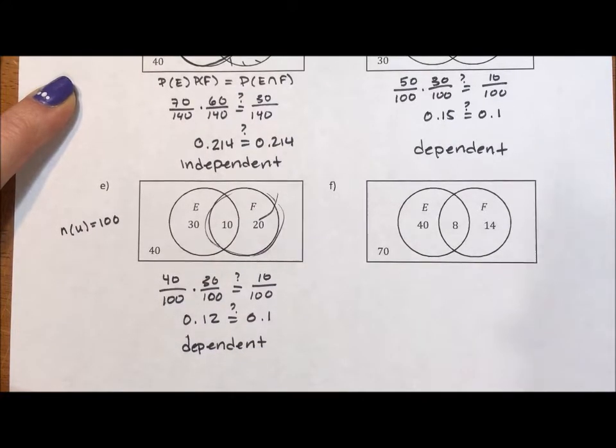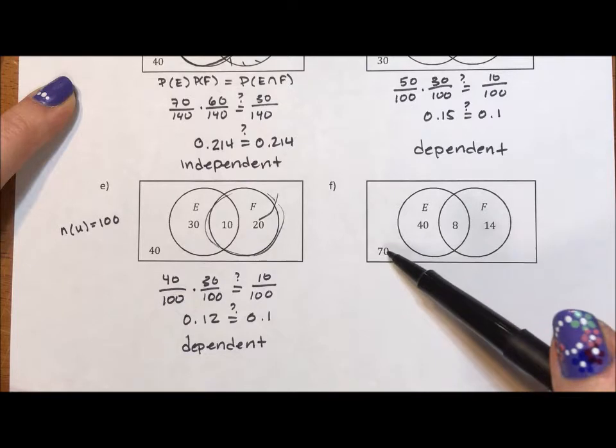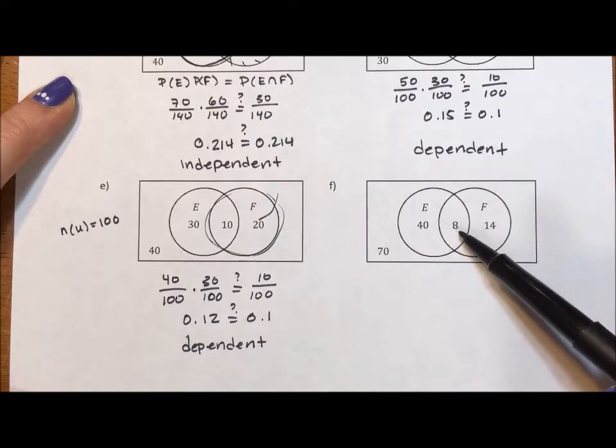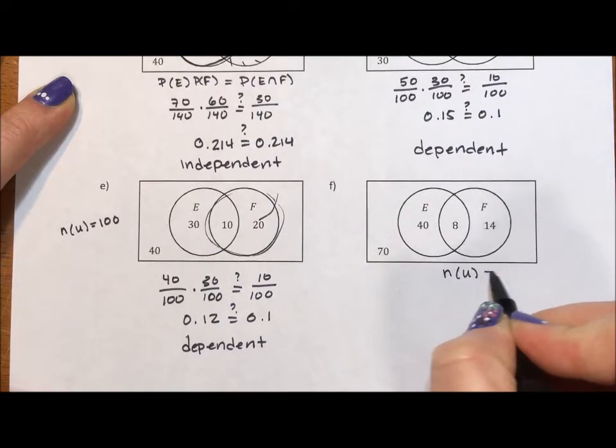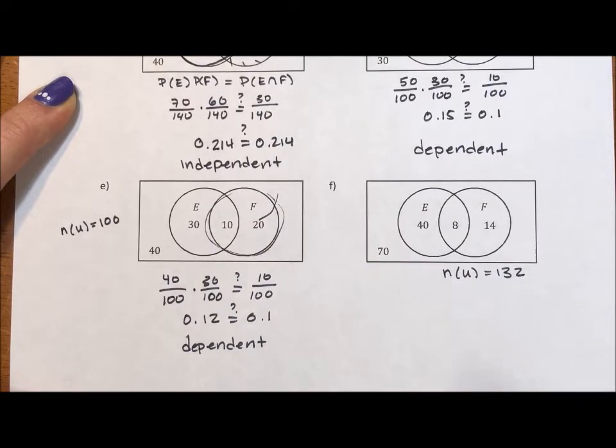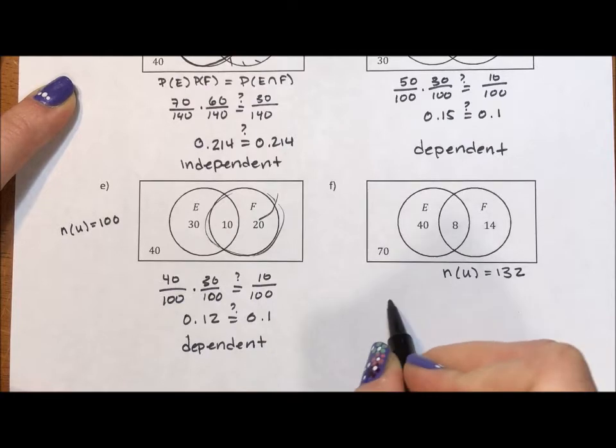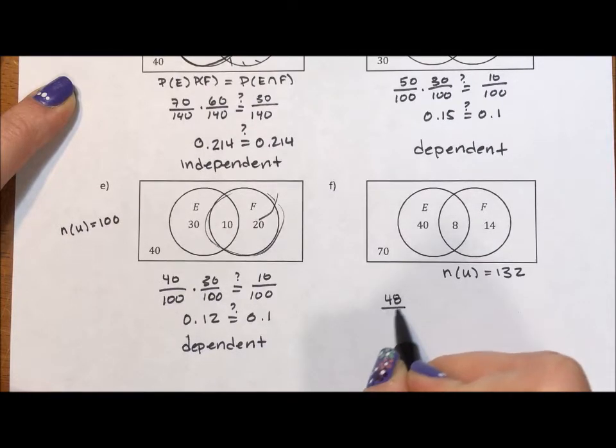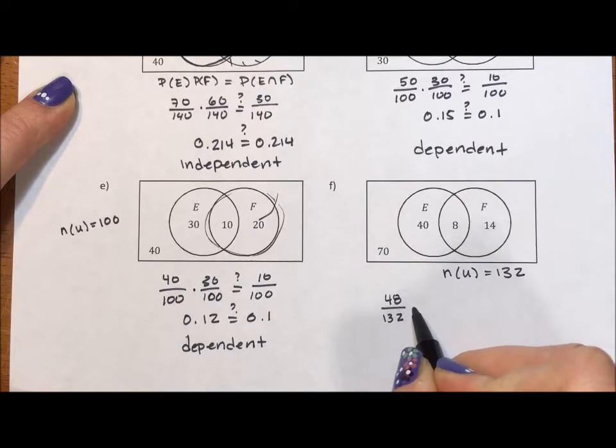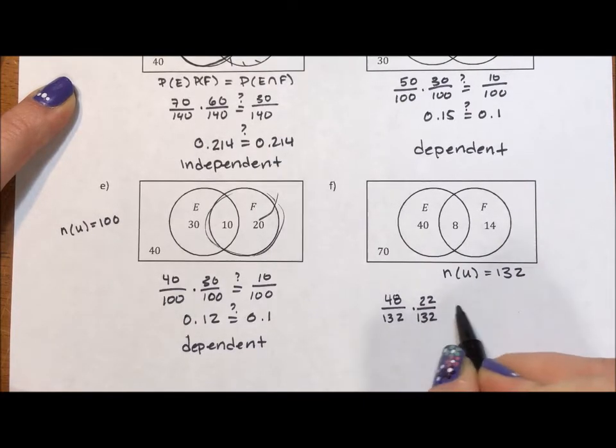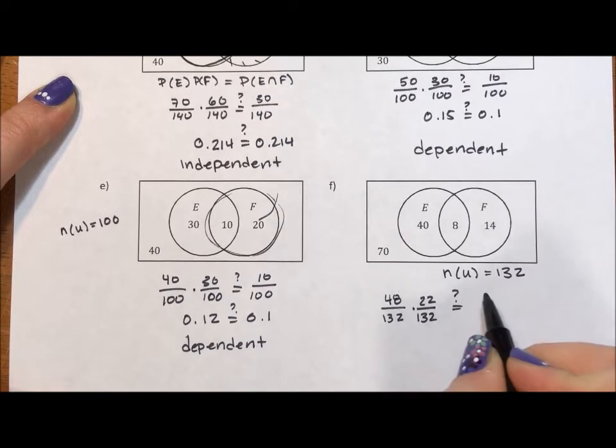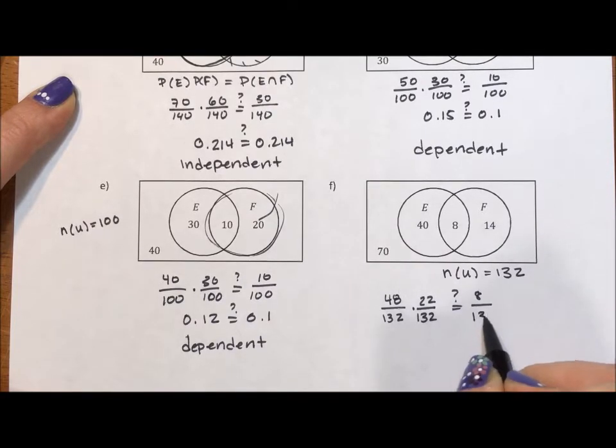And our last example. So if we add up our universe, 70, 110, 118, 132. The number in this universe is 132. So probability of E is 48 over 132. The probability of F is 22 over 132. And we want to know if this is going to equal 8 over 132.